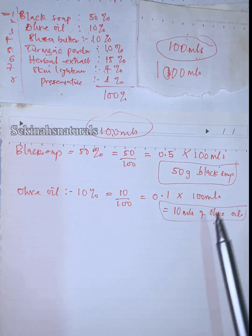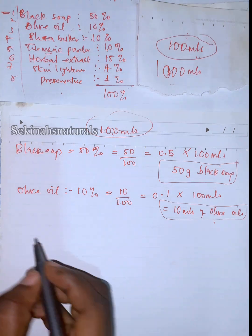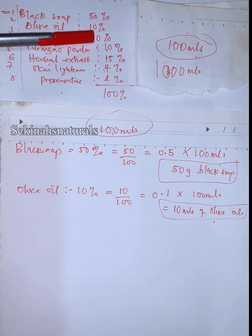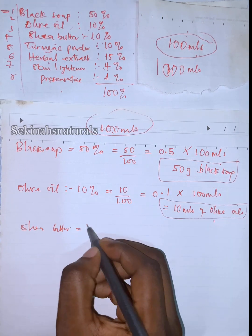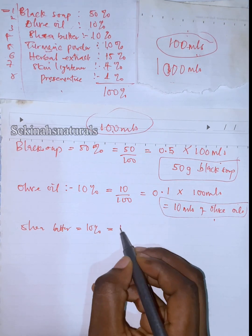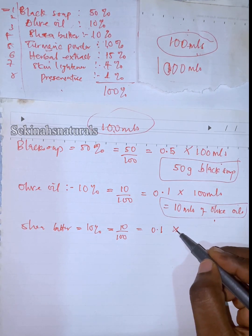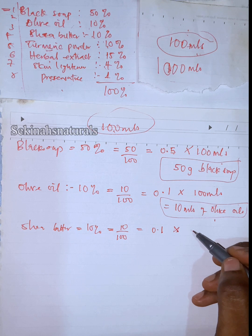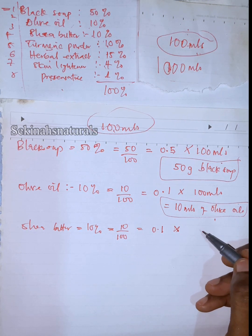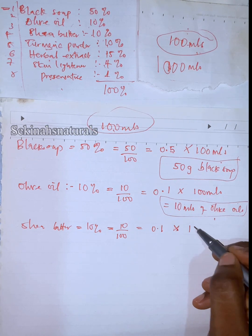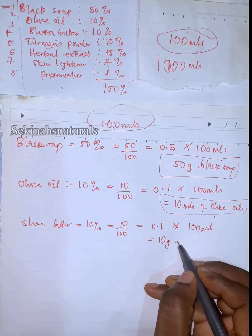So we are using 10 mils of olive oil. In this recipe we are going to measure 10 mils of olive oil to combine with 50 grams of black soap. Now the next ingredient is shea butter. The recipe calls for 10% shea butter, so that is 10 over 100, which gives us 0.1, times the total amount of soap you want to make. We are making 100 mils, so this gives us 10 grams of shea butter.